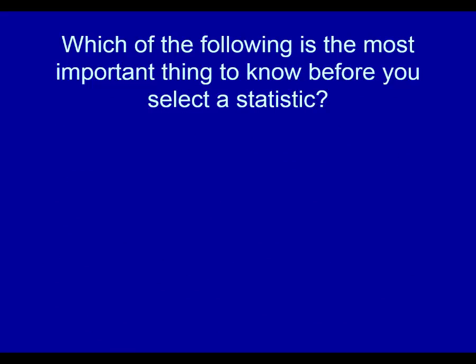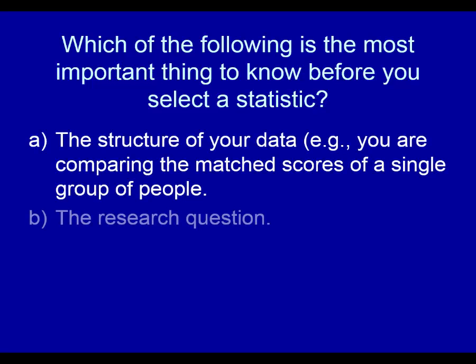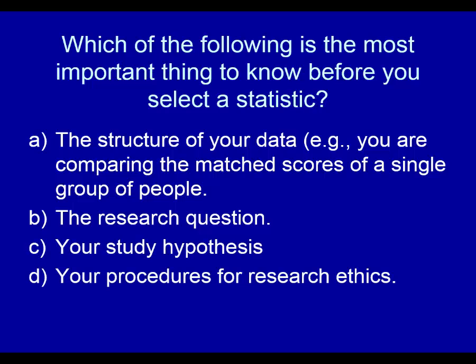Which of the following is the most important thing to know before you select a statistic? Hit the pause button, look over the options, and decide what the answer is before coming back. The answer is A — the structure of your data. That's far more important than the research question, the study hypothesis, or procedures for research ethics. It is essential that you know the structure of your data: are you comparing the matched scores of a single group of people, or comparing a set of post-test scores to a threshold or pretest mean? That is what you need to know in order to find a statistic.